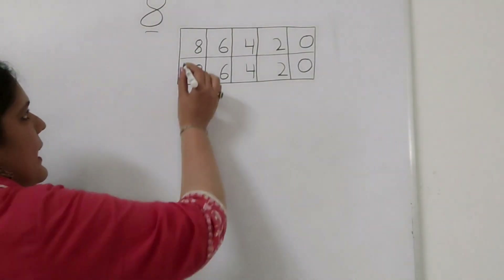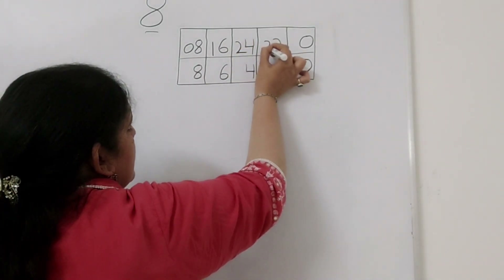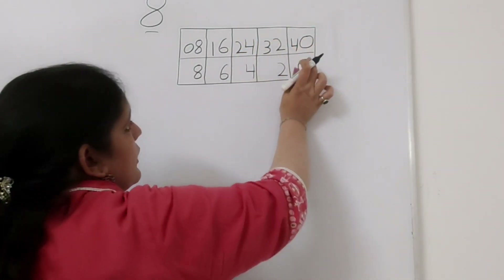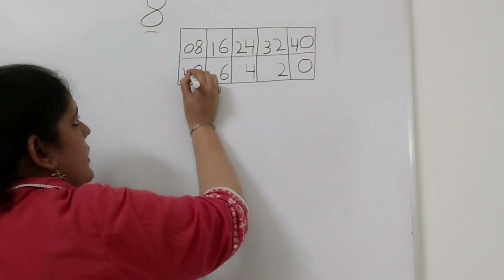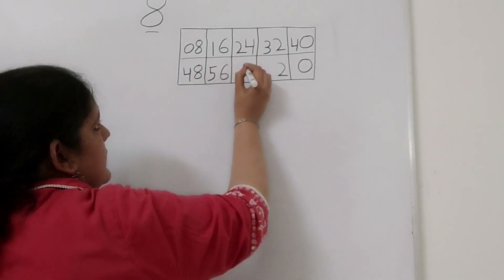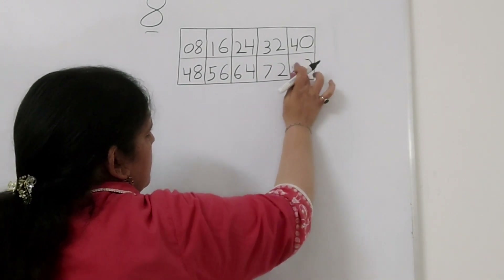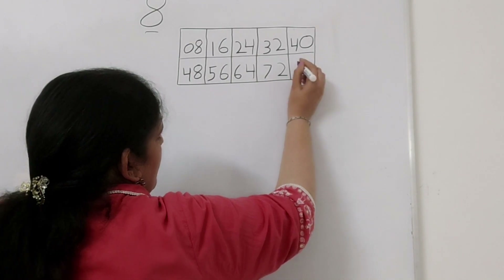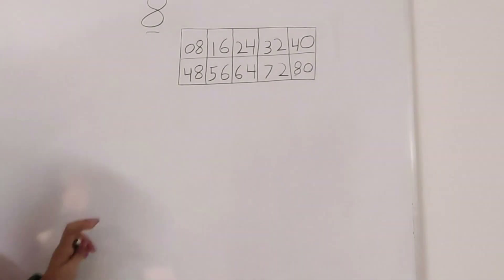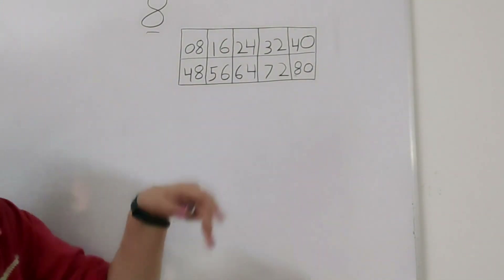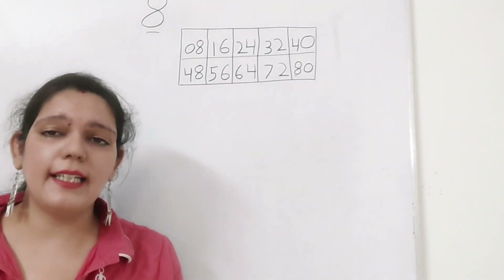Now what we will do for the tens place is we will write the counting, simple as that: 0, 1, 2, 3 and 4, then copy this 4 to the first column of the next row — 4, 5, 6, 7 and 8. And yes, this is our 8 times table. It looks really simple. If you learn by these tricks you will never forget the tables.